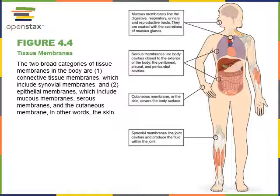There is a serous fluid secreted between those two layers. For example, the parietal layer of the pleural membrane lines the thoracic cavity surrounding the lung, while the visceral layer covers the surface of the lung, with fluid between them inside the pleural cavity. Similarly, the visceral pericardium covers the heart and the parietal pericardium lines the pericardial cavity. The parietal peritoneum lines the abdominal cavity walls and the visceral peritoneum lines the surface of the intestines.